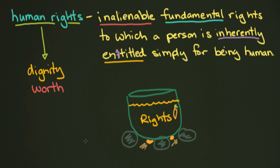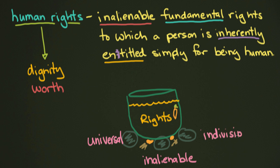The foundational stones of rights are these three things. First, we've got universality. Human rights are universal. They are inalienable. And they are indivisible. Universal means that human rights apply to everyone, no matter what — every person, all humans, across the entire spectrum of humanity. That's why many people try to make a connection between this universality and natural law. Inalienable means that they can't be taken away.